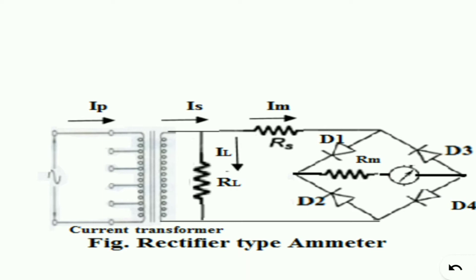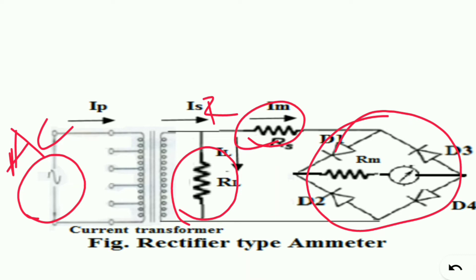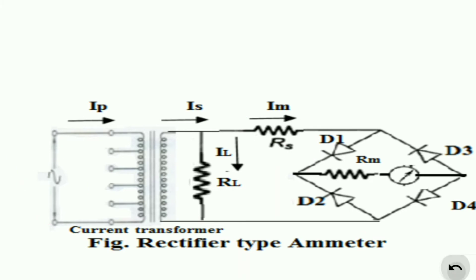For the connection: first we have AC input. Next we have a multiplier resistance, then a series resistance and load resistance RL. We then have the rectifier output going to the directional movement, which is the PMMC instrument. This is the connection and this is the main point.